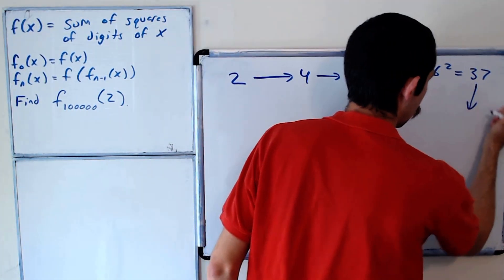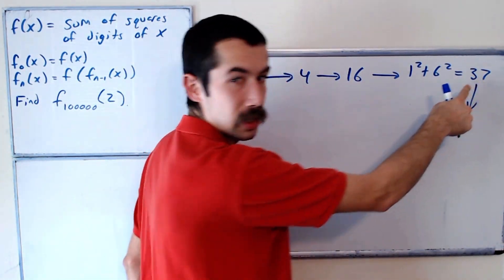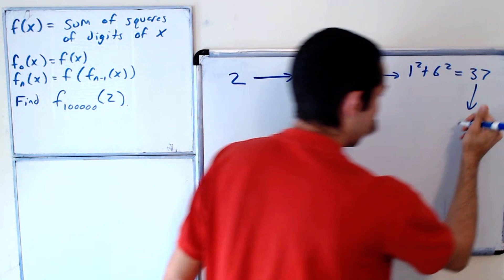Okay, and if we go along, this is 3 squared which is 9 plus 7 squared which is 49, so we get 58.